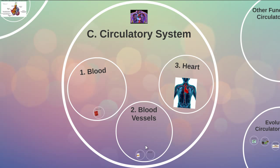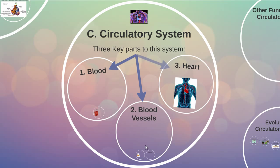The next system we're going to talk about is the circulatory system, and there are three parts to this system: the blood, the blood vessels, and the heart.